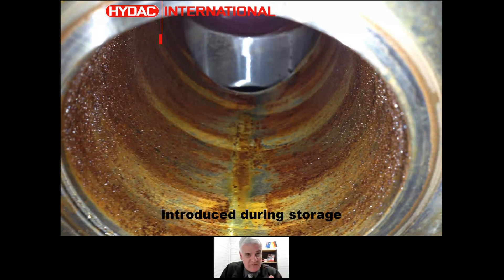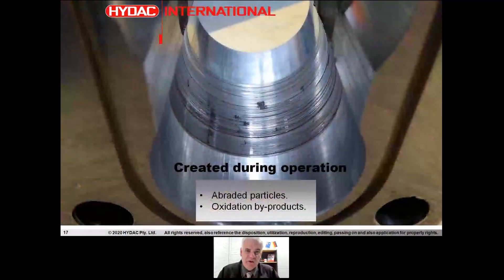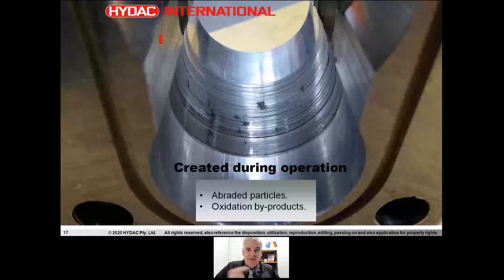The way we store components, if they're not going to be used immediately, is absolutely critical. I've got a photo here of a system that was put in storage and then put back in service in that condition. A lot of contaminants are also going to be created during operation — abraded particles purely from wear occurring in the system. Contaminants lead to further contamination, and there are different wear processes and byproducts of oxidation within the lubricant itself.